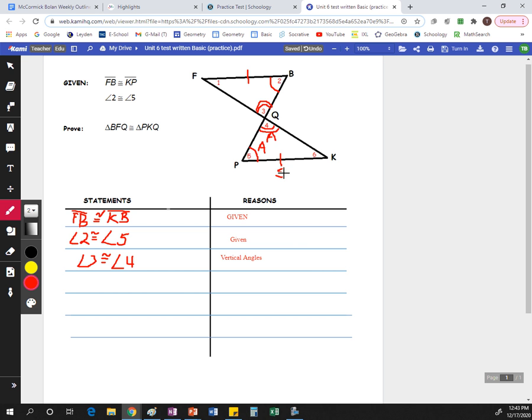This is an example of angle, angle, side. So we can take what we're supposed to prove, that the two triangles are congruent, and we can say that that's true, and our reason will be angle, angle, side.